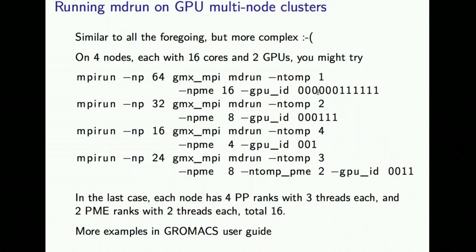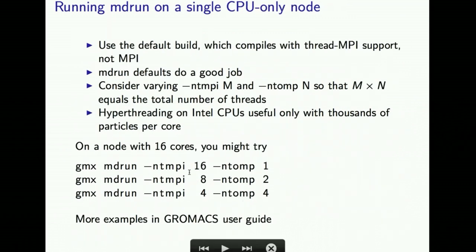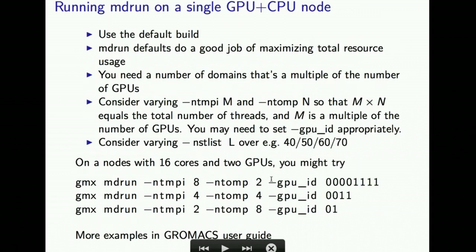Ramon's written question asks about checking combinations of ntmpi, ntomp, and nstlist — should we try all combinations with all possible nstlist options? Are they coupled? What's the best way to optimize? You do want to choose the number of ranks and the number of PME ranks so that you keep all cores busy — that's the set of parameters to optimize. nstlist is one you might vary independently and you can see the same kind of variation in performance. nstlist is independent of those other degrees of freedom.